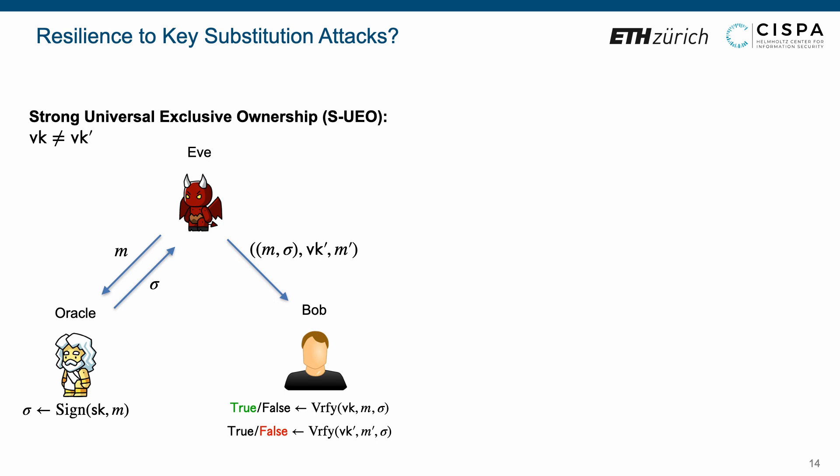Roughly speaking, the key substitution attacks aim to forge a new verification key, or a new message that can pass the verification upon some real signatures. A digital signature scheme without resilience to key substitution attacks directly loses the non-repudiation property. That is, a user that has signed some message cannot at a later time deny having signed it.